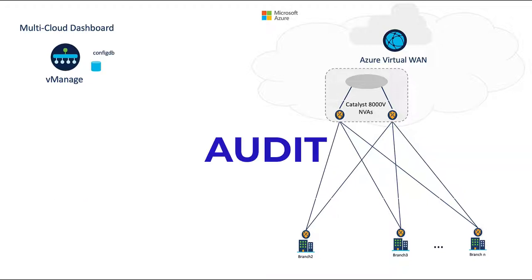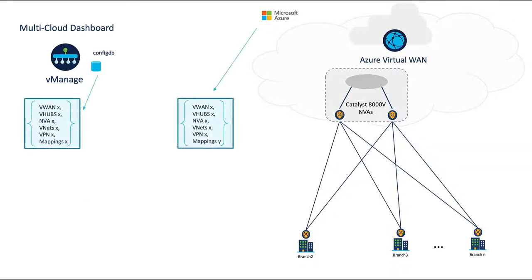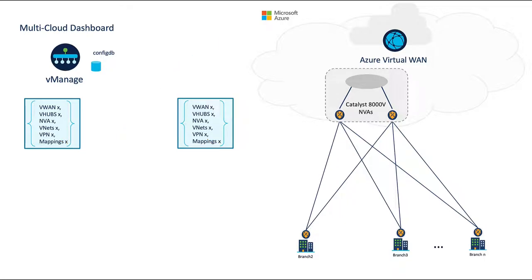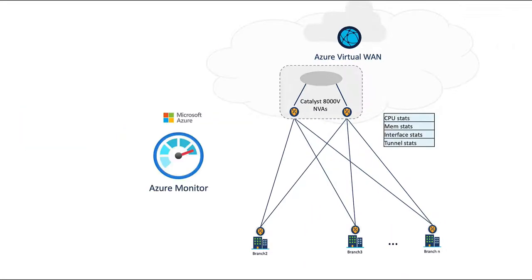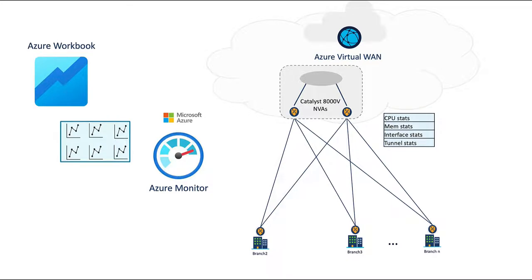vManage can also perform periodic and/or ad hoc audits where it compares its configuration with that of Azure. If it notices discrepancies between the configurations due to inadvertent changes, vManage reports on the out-of-sync items, suggests remediation steps, and can even perform those actions for us. Our cloud gateways can also natively send telemetry data to Azure Monitor. This data can then be aggregated and sent to Azure Workbooks where it can be further analyzed to assist with setting long thresholds, baselining, trend analysis, and troubleshooting.